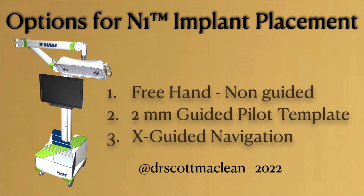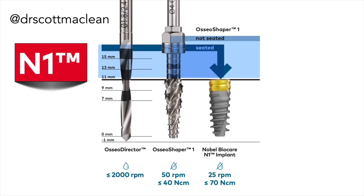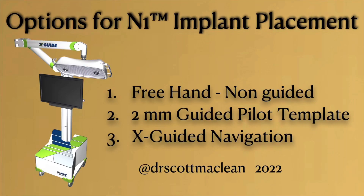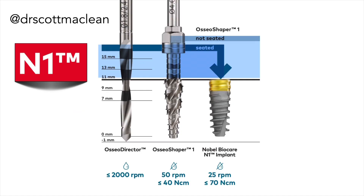The options for N1 implant placement are: number one, a freehand non-guided option where you take the director drill and follow with the osseo shaper; number two, a 2mm guided pilot template followed by the osseo director and osseo shaper; and number three, use the X-guide following the protocol of osseo director then osseo shaper.